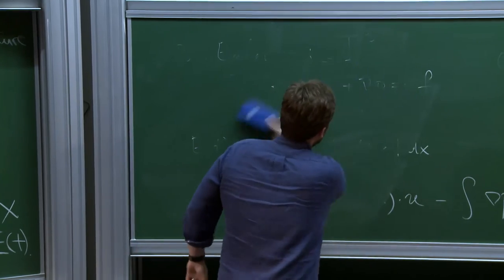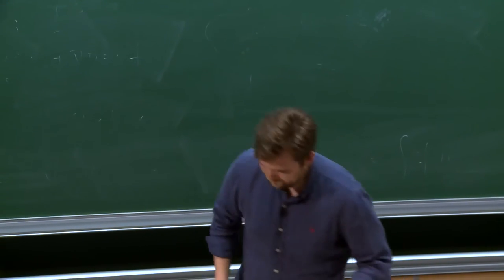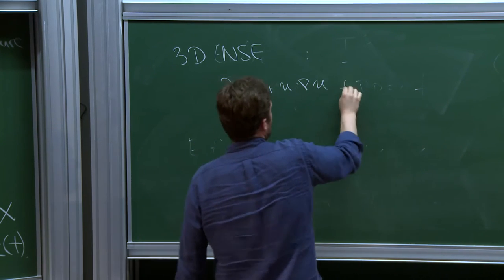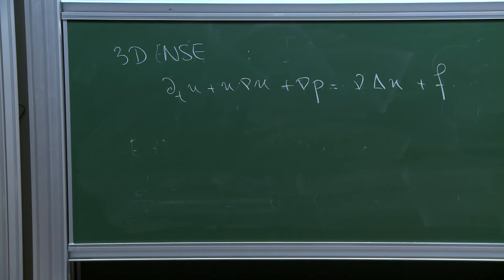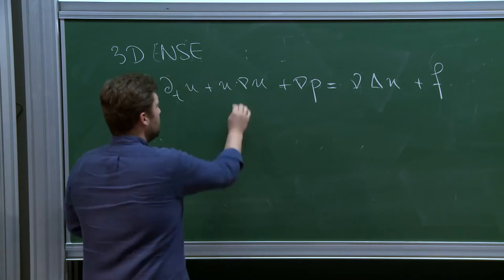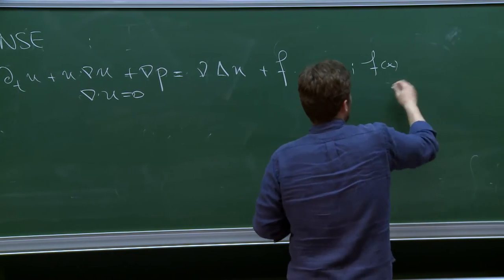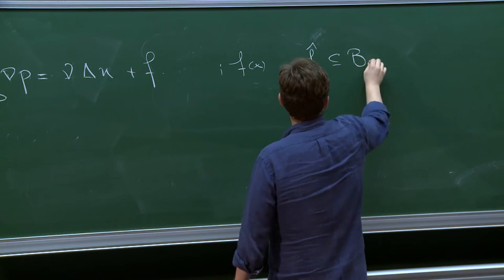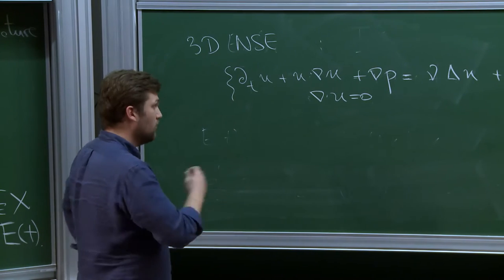There has been tremendous progress on this question — it is currently still open, but especially through the program started by De Lellis and Székelyhidi. Before discussing that, let me erase Euler from the board and write Navier-Stokes and say a few words about connections to the Kolmogorov 1941 theory of turbulence. For Navier-Stokes in 3D it is very important that we put in the force — unlike Euler, this is a theory about turbulence and the long-time behavior of solutions. Think of F as stationary in time, smooth, and supported in frequency at low-to-medium scales.